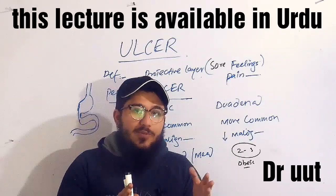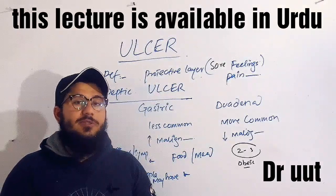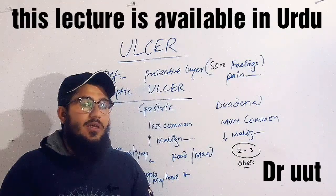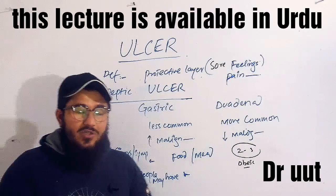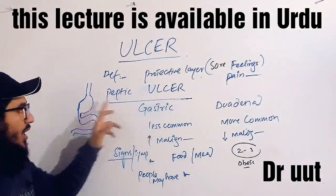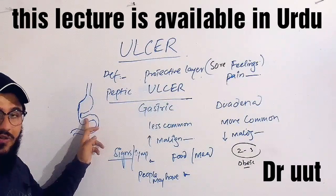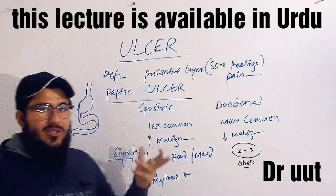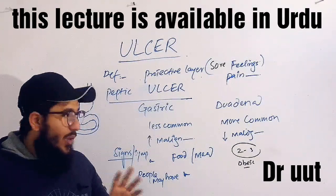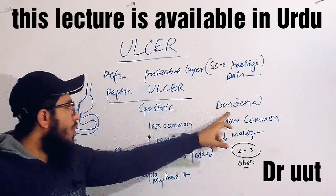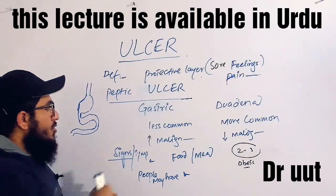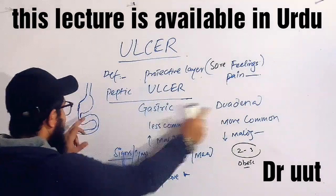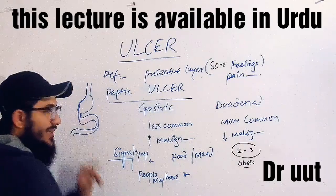These pain sensations are of two types, due to which the peptic ulcer is also of two types: gastric and duodenal. Gastric stands for the stomach and duodenal stands for the first part of the small intestine, known as the duodenum. When the ulcer is in the stomach, that is called a gastric ulcer. When the ulcer is in the small intestine, that is known as a duodenal ulcer.